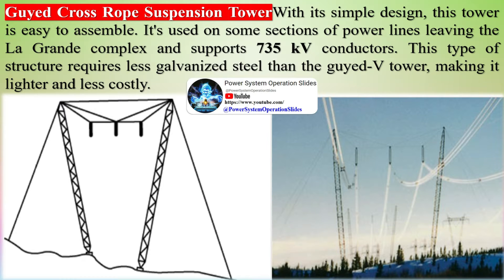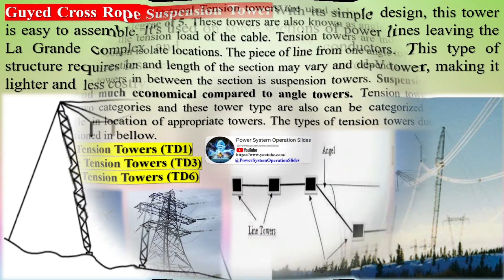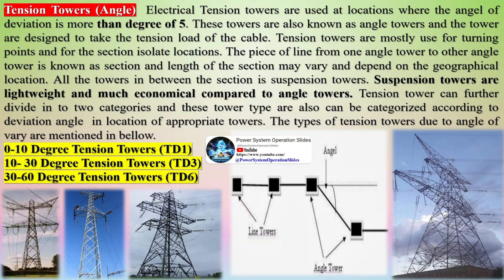Electrical tension towers are used at locations where the angle of deviation is more than 5 degrees. These towers are also known as angle towers and are designed to take the tension load of the cable. Tension towers are mostly used for turning points and for section isolate locations.